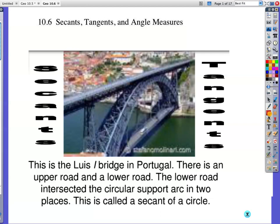Not the best picture, but I just couldn't resist it. There's a bridge. Here's a support beam for the bridge, and here's a bridge with a road on it, and there's a road on it over here. So one of these things is a secant. This sure looks like the tangent, doesn't it? So that leaves this to be a secant, and it's called the Luis Bridge in Portugal. There's an upper road and a lower road. The lower road intersects the circle support arc in two places. This is called a secant of a circle.